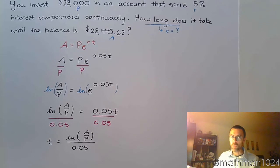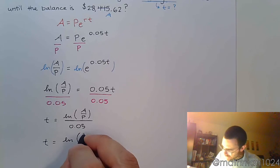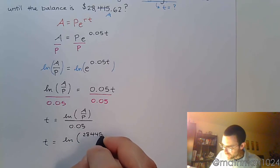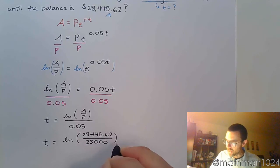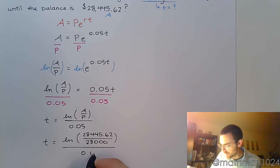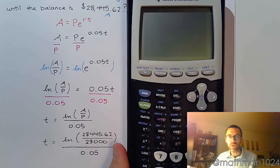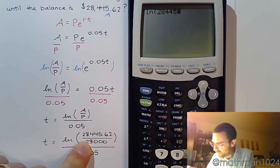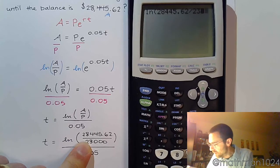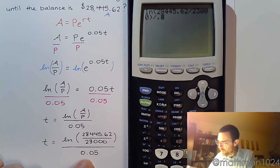Now we know what A and P are, so we work it out — and by we, I mean the graphing calculator. A is $28,445.62 divided by P, the initial investment of $23,000, all divided by 0.05. So we're computing ln($28,445.62 / $23,000) divided by 0.05.